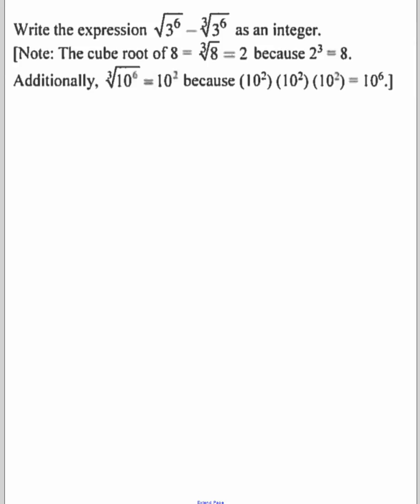A cube root works very similarly. It just means what number times itself three times will give me what's under the root sign. For example, this is showing you 8. 2 times 2 times 2 gives you 8, and so the cube root of 8 is 2.